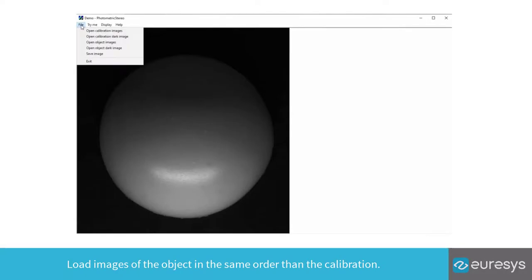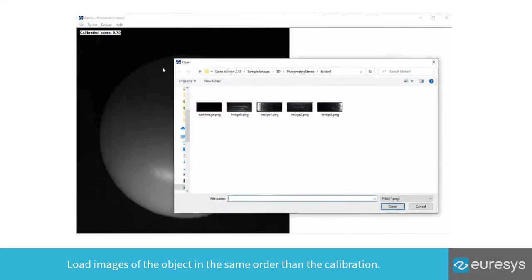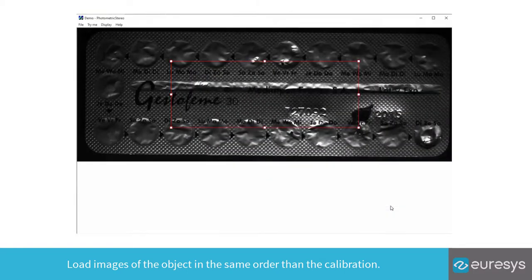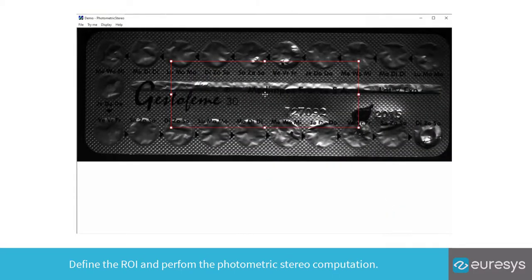Load images of the object in the same order as the calibration. Define the ROI, and perform the photometric stereo computation.